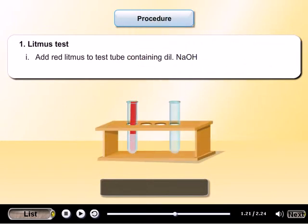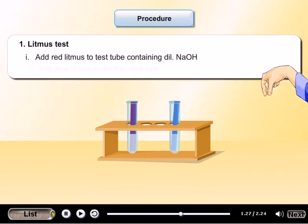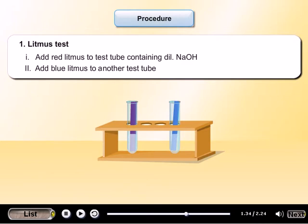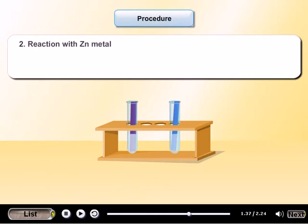Add red litmus to test tube containing dilute NaOH. Add blue litmus to another test tube.